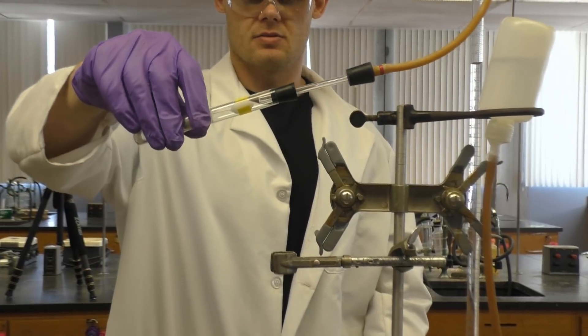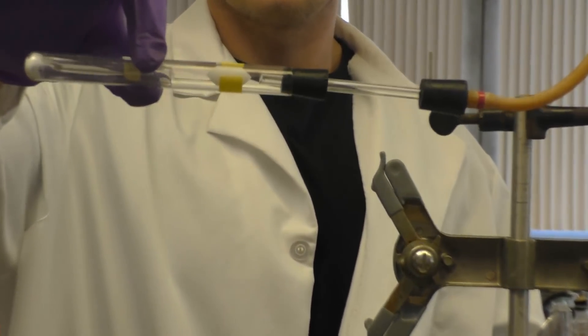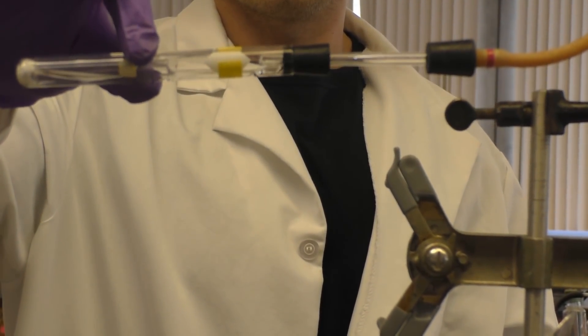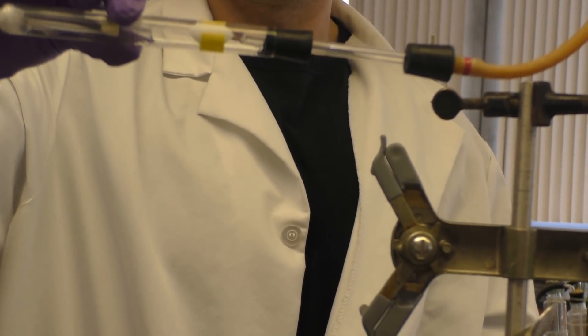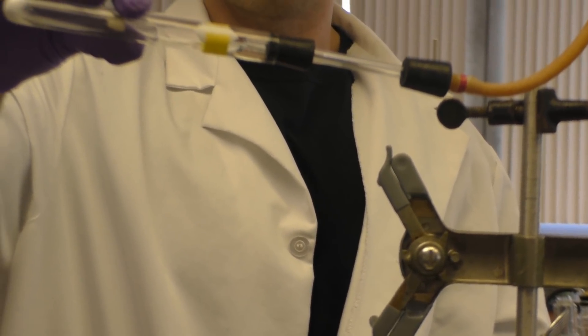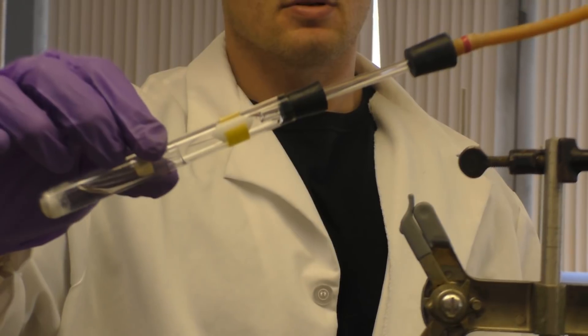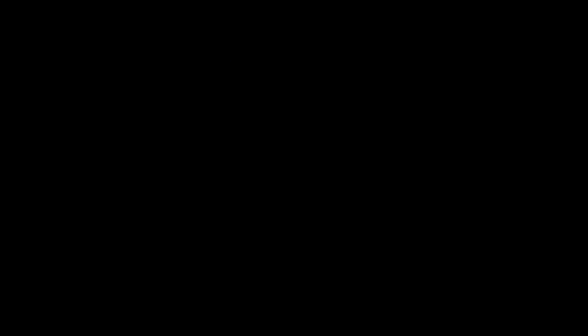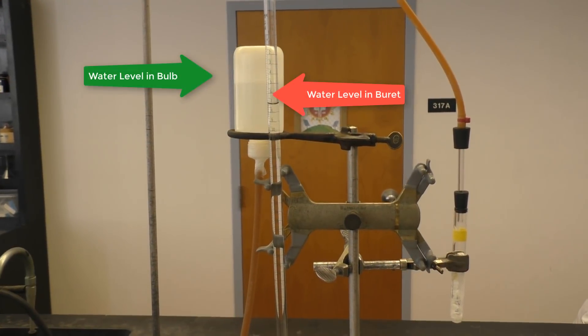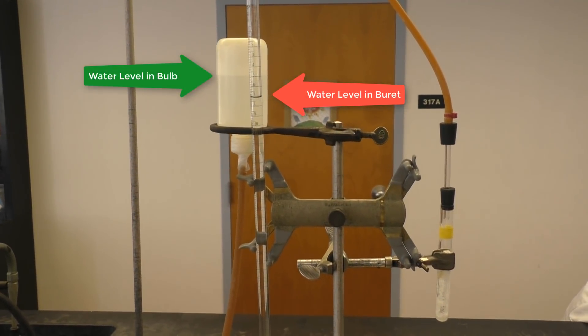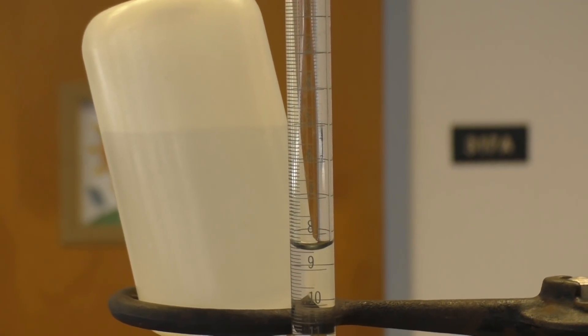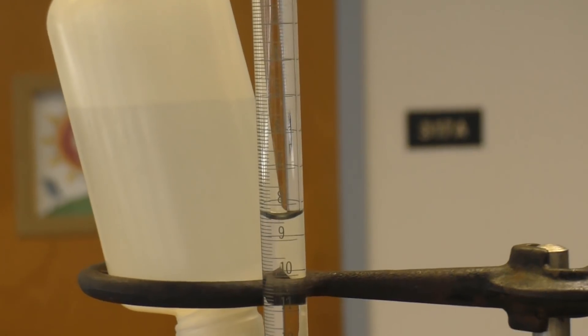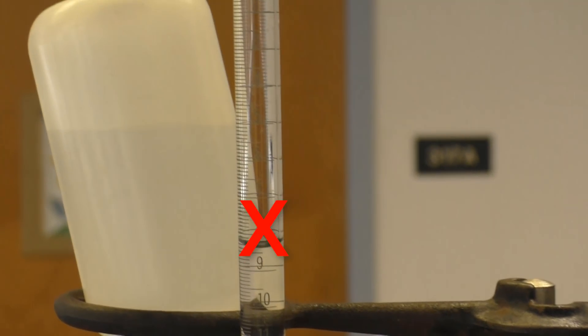React the Alka-Seltzer with hydrochloric acid by loosening your clamp holding your reaction chamber and then tilting the test tube so that the hydrochloric acid pours onto the Alka-Seltzer powder. Then re-tighten your clamp and watch. Notice how as the reaction proceeds, the water level in the burette changes. This is due to the production of CO2 gas which pushes the water in the burette. Your reaction is done when the water level in your burette stops changing. Do not write down this volume.